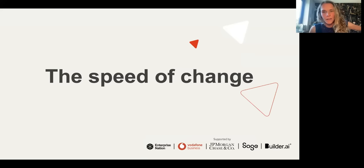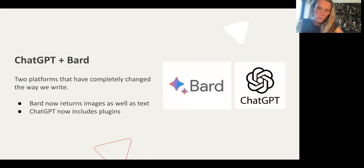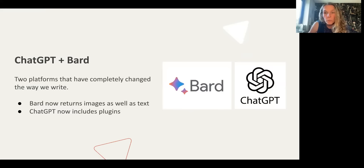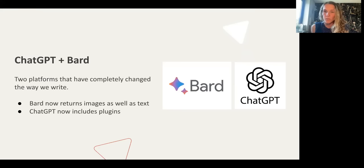In terms of tools available, there are two platforms which have completely changed the way we write with AI: ChatGPT, which I'm sure most of you know about, and Bard, which is Google's version. ChatGPT is OpenAI's large language model. Google followed with Bard — I tend to use ChatGPT over Bard, but I'm still exploring it. We have to remember these tools are really new — this time last year neither were out in the public domain. Bard has very recently started returning images as well as text, and ChatGPT now includes a range of plugins on the paid version.